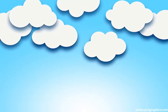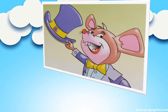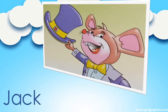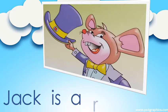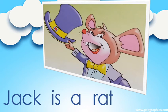Let's move to the first page. Here we're going to read the following sentence — try to read it with me. J-A-C-K. As we said, the two letters C and K make one sound: K. Jack. Is. A. R-A-T. Rat. What do we put at the end of the sentence? A point. This is great.